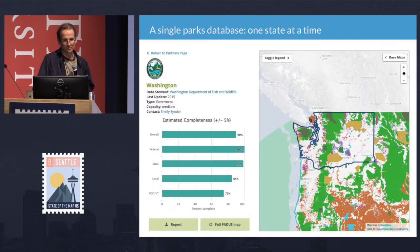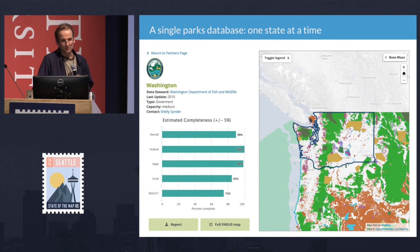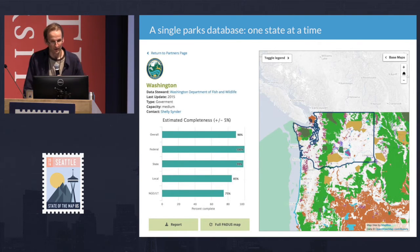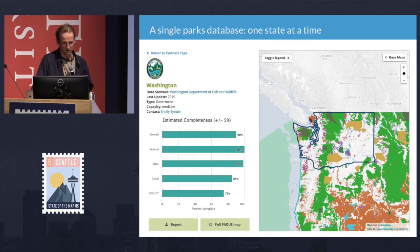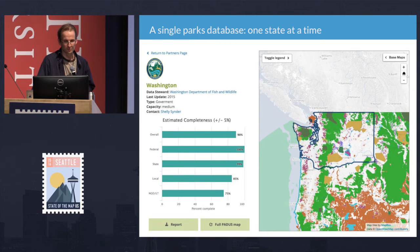There's a system of state stewards, so for Washington there's a specific steward assigned. Pages for each state will be live on a new version of a site called protectedlands.net just as soon as USGS gives us the okay to publish it, which has been pending for about six weeks.